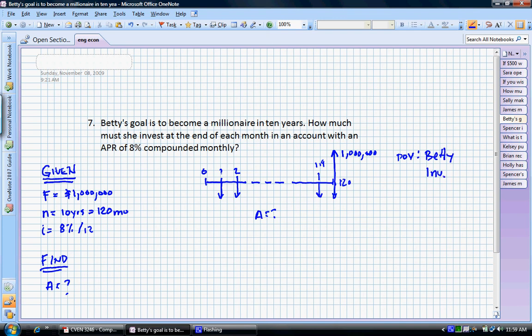All right, now we're going to use the formula on this one, remember, because we can't use the factor table because we have 8 twelfths of a percent. 8 twelfths of a percent is not available on our factor tables, so we're going to use the formula.